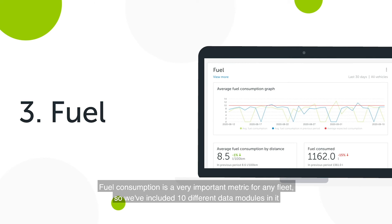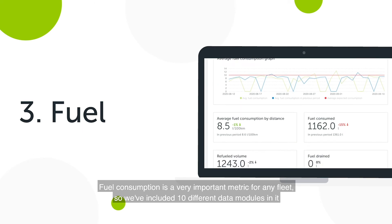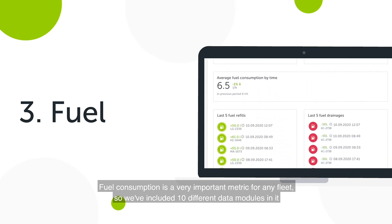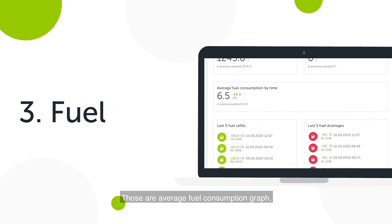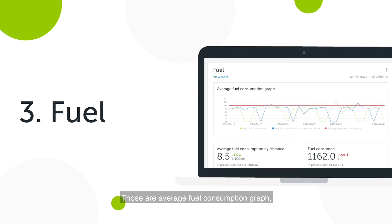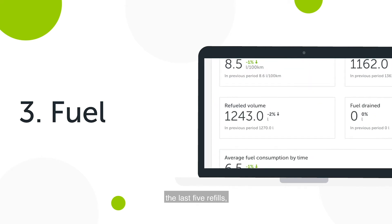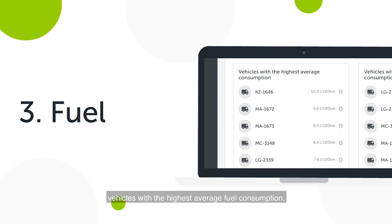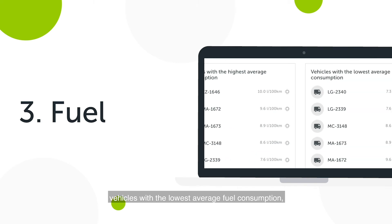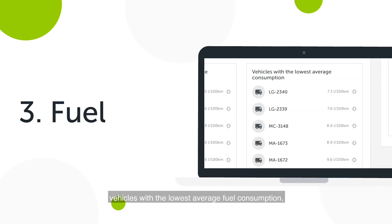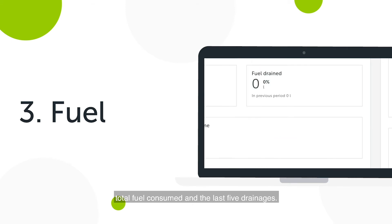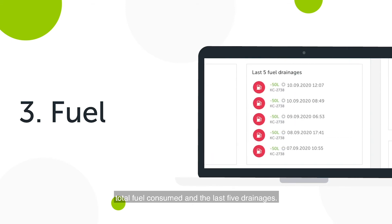Fuel consumption is a very important metric for any fleet, so we've included 10 different data modules in it. Those are: Average Fuel Consumption Graph, Average Consumption by Time, Refueled Volume, The Last Five Refills, Vehicles with the Highest Average Fuel Consumption, Vehicles with the Lowest Average Fuel Consumption, Total Fuel Consumed, and The Last Five Drainages.